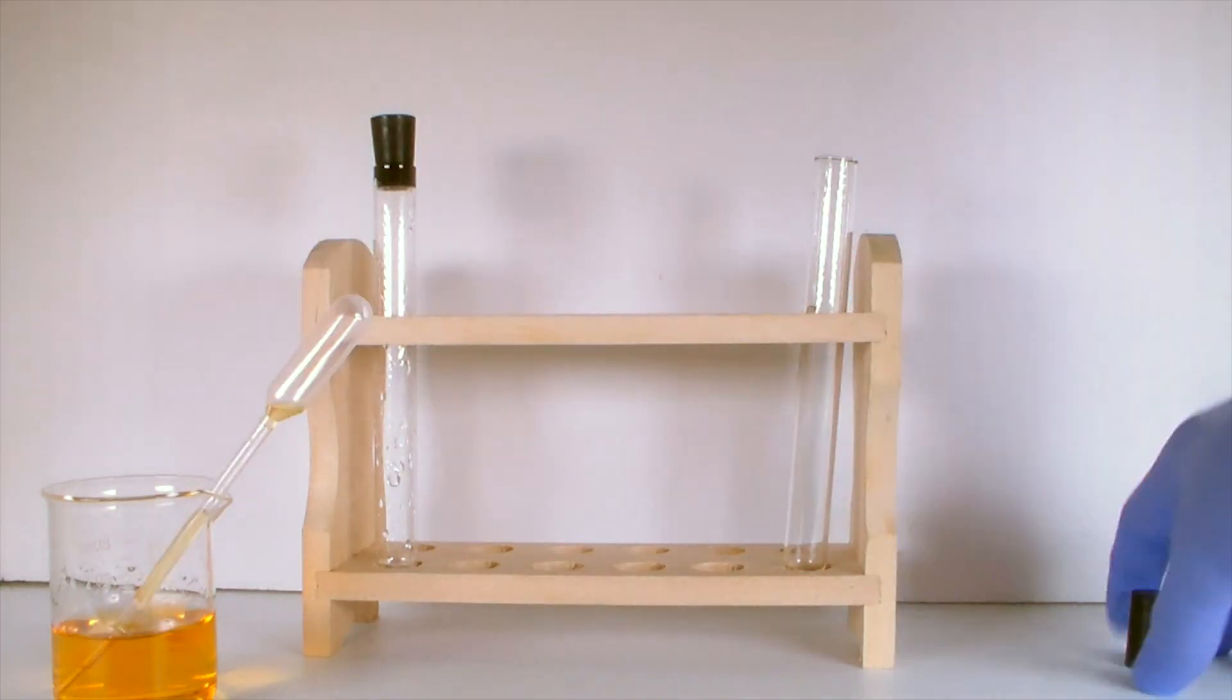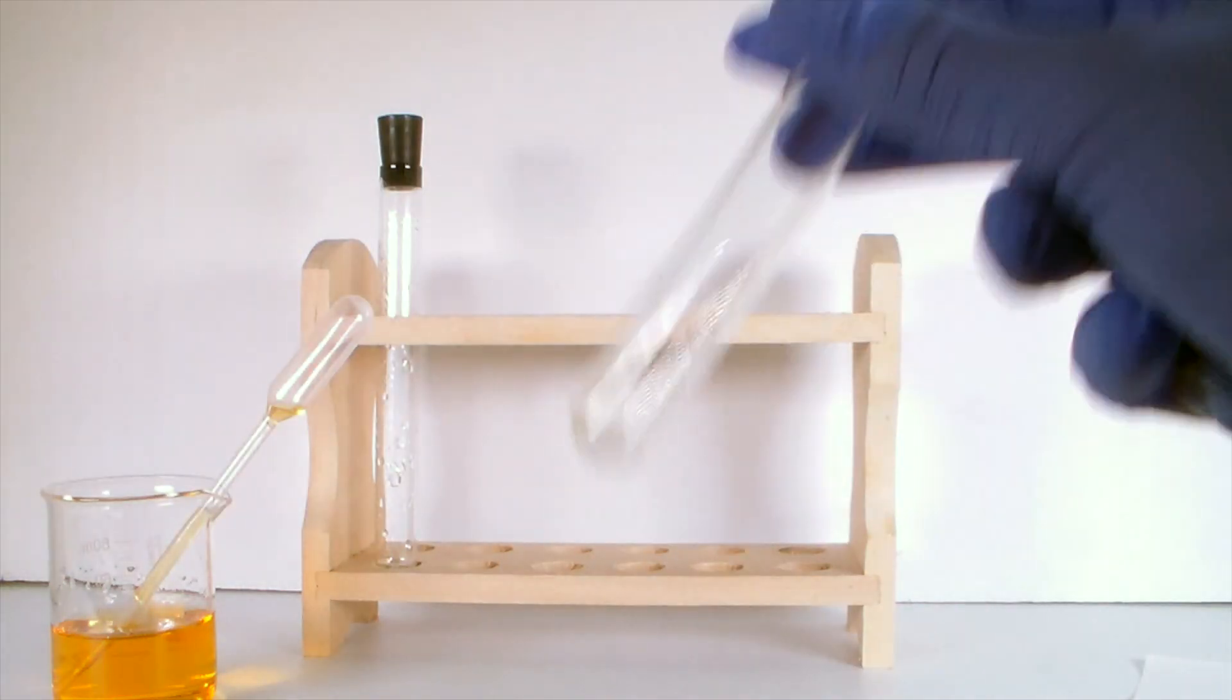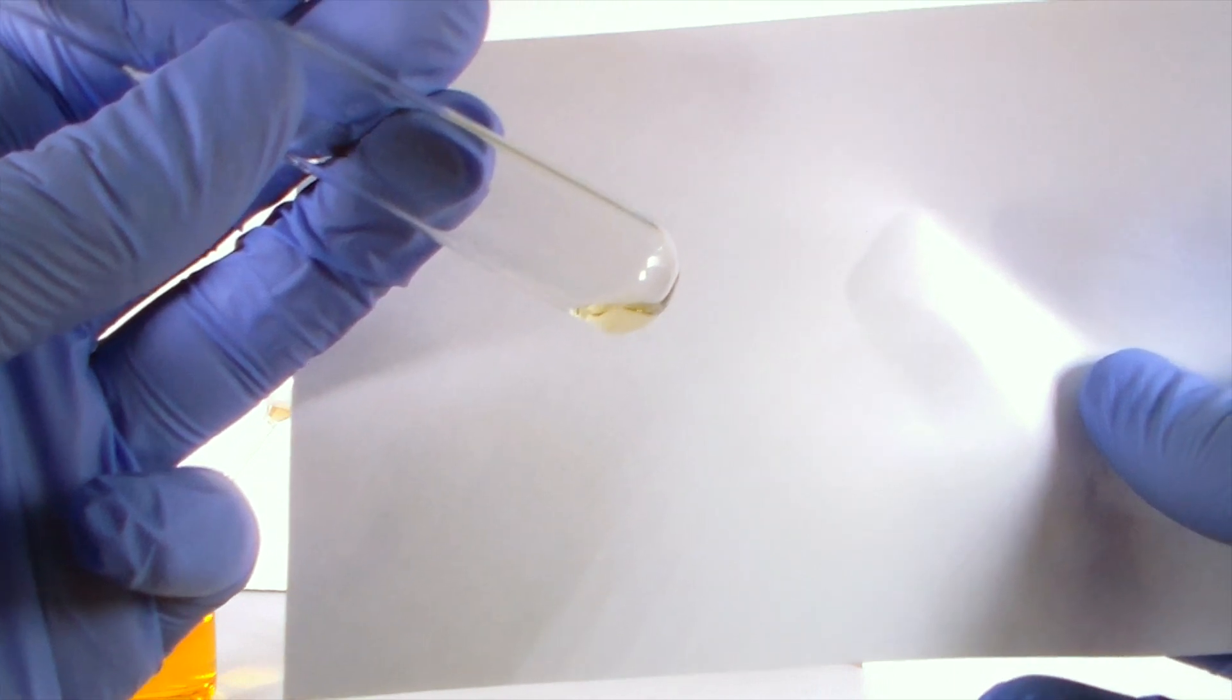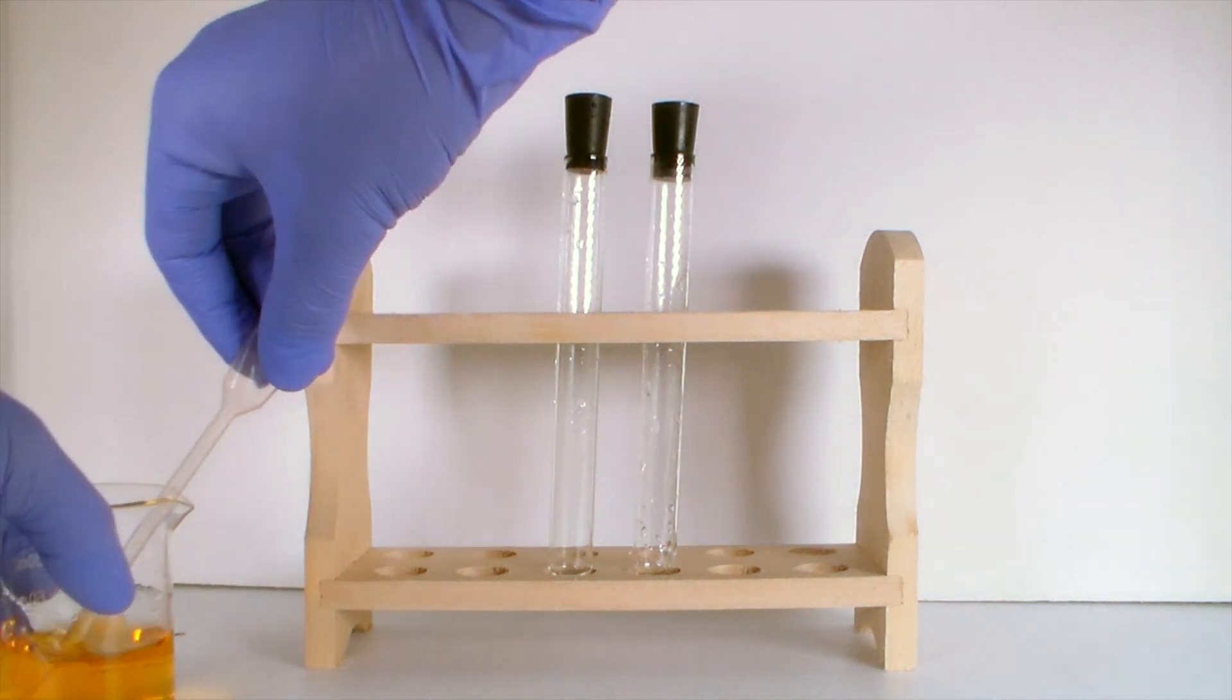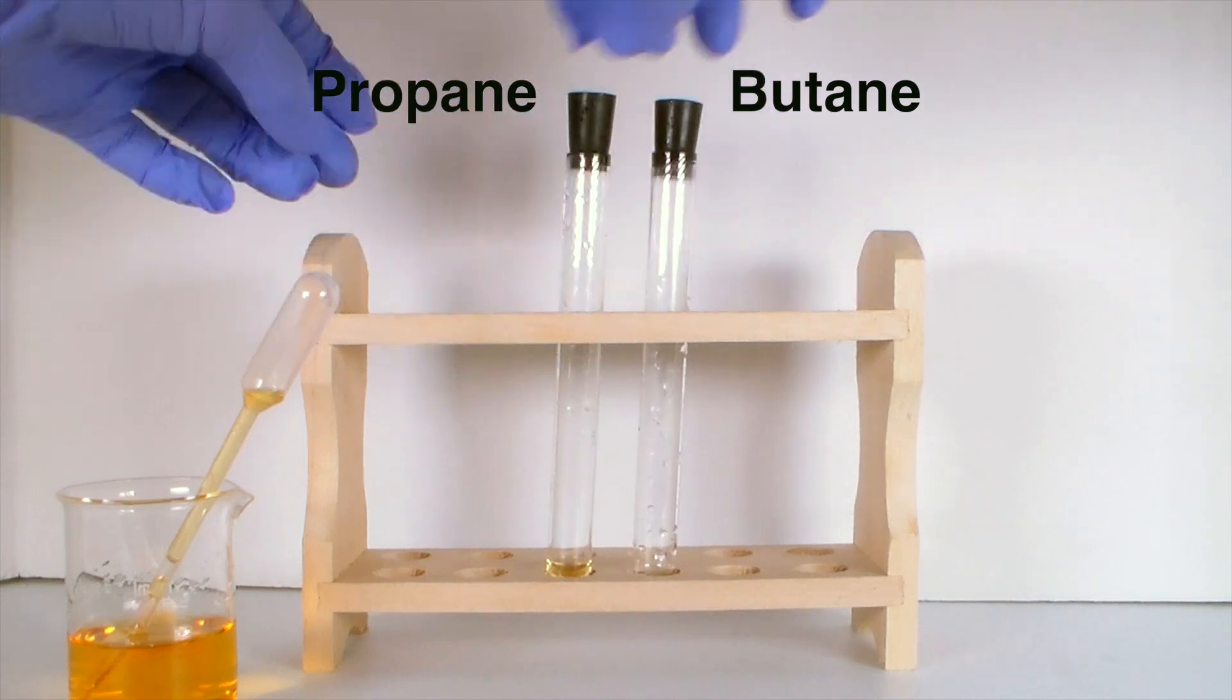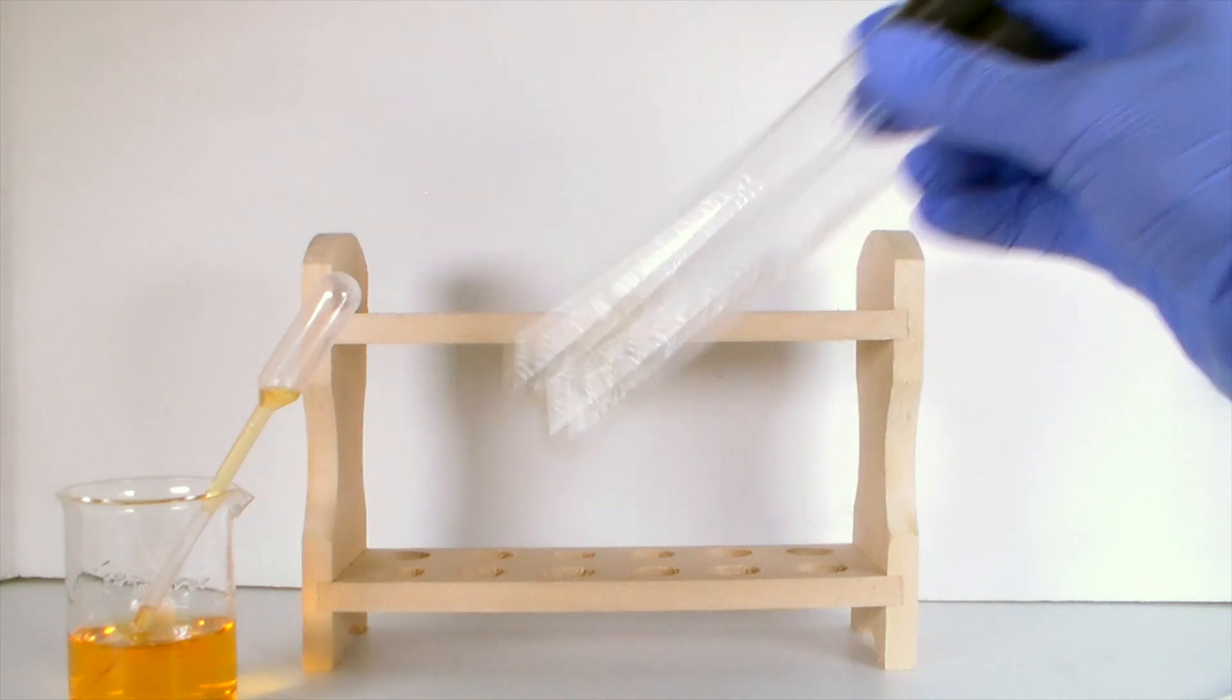Let's compare that to a test tube full of just normal air. You can see that nothing happens and the yellow color just stays the same. However, we can also prove that this reaction doesn't happen with alkanes. Here I have two test tubes full of propane and butane, and you can see that when iodine water is added, the color does not change.